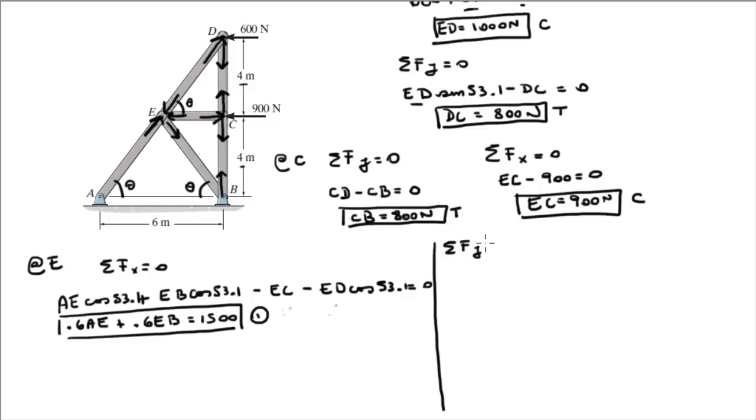So sum of the forces in the y also at E is equal to 0. So in the y we have AE times the sine of 53.1, that's the y component of this force right here, minus EB times the sine of 53.1, that's the y component of this one right here. EC is doing absolutely nothing in the y direction, but we have a component ED coming down minus ED times the sine of 53.1. And all of that is equal to 0. And again, we have ED so we can clean this equation to look something like this. Let's call this 0.8 AE minus 0.8 EB is equal to 800. Let's call this equation 2.